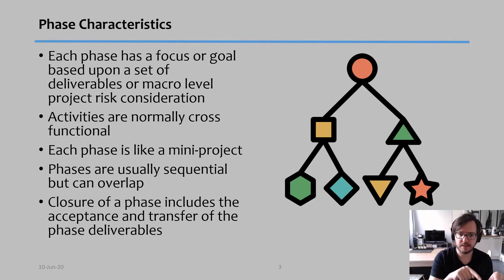Closure of a phase includes the acceptance and transfer of those phase deliverables. In other words, once I finish phase one, whatever I achieved from phase one is transferred to phase two. And if a phase is closed, that means that the stakeholders or the project manager or your senior management has approved that whatever was created in phase one is good enough to go into phase two.